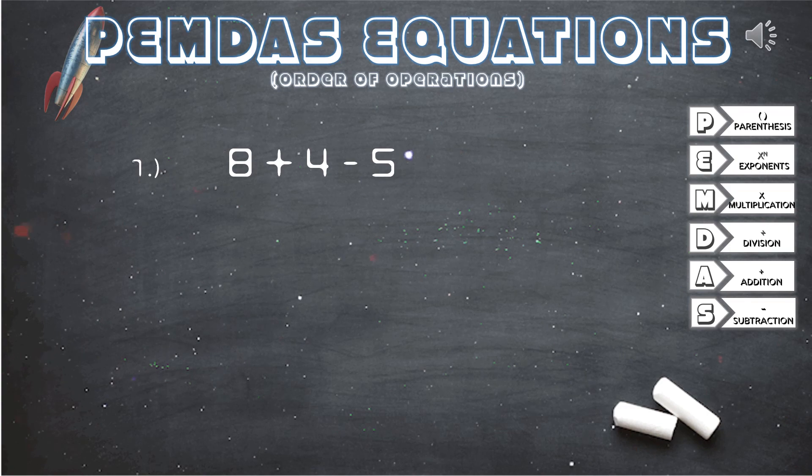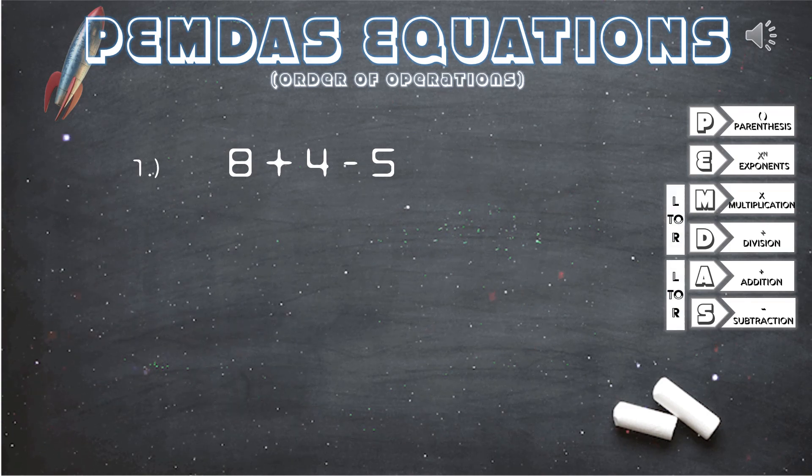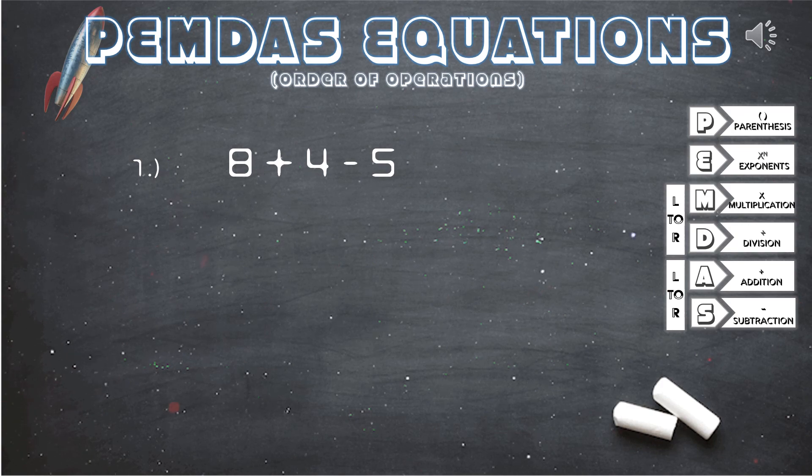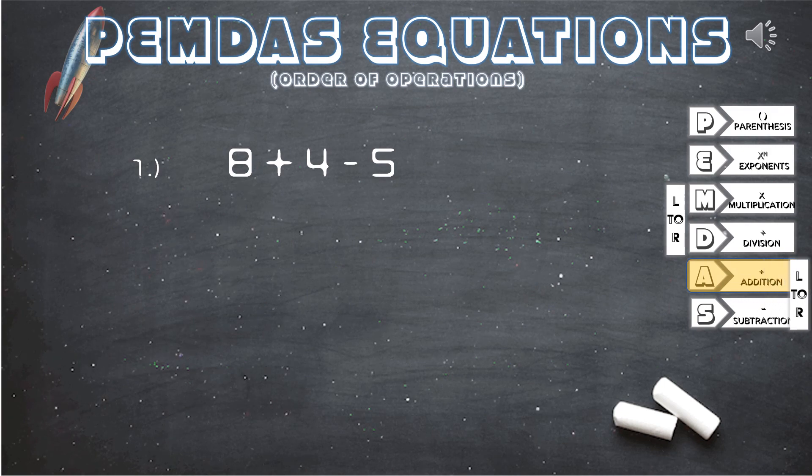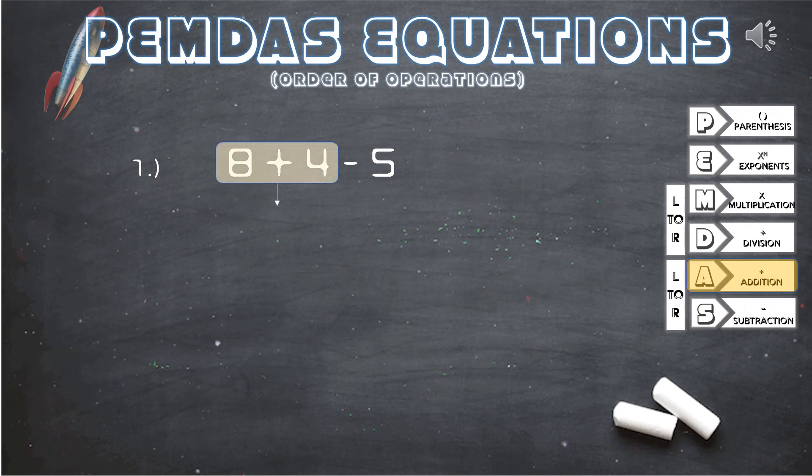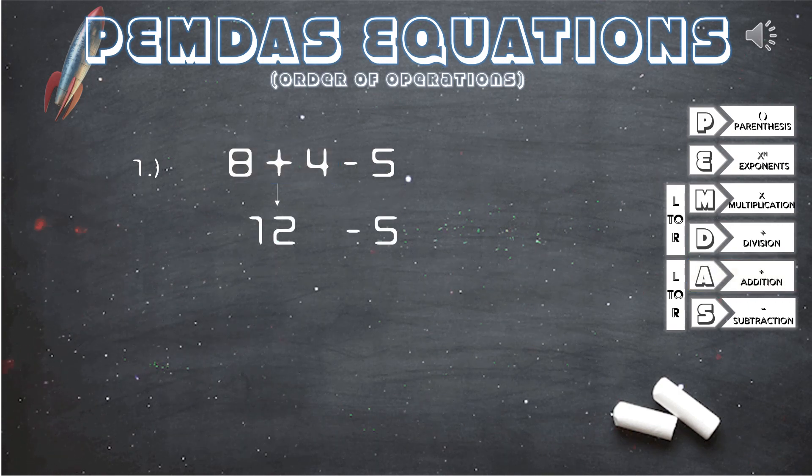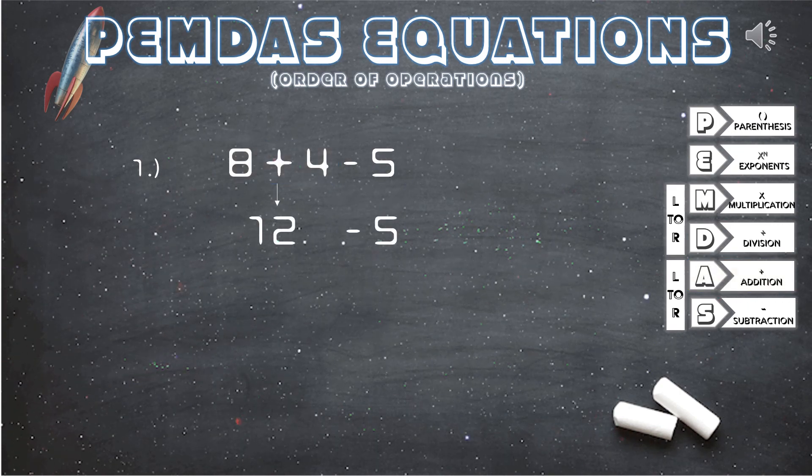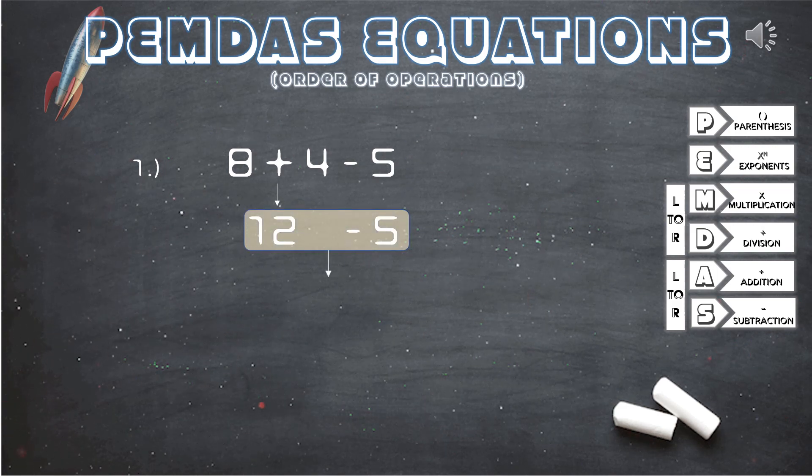For our first equation, 8 plus 4 minus 5, we have addition and subtraction. Using our PEMDAS guide to our right, we know that we will be solving this equation from left to right. First, 8 plus 4, which equals 12. We bring down the 5 and next we solve 12 minus 5. And our answer is 7.